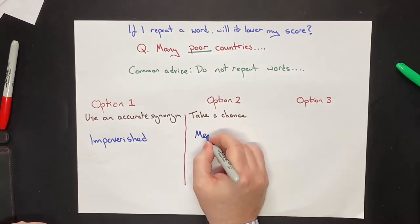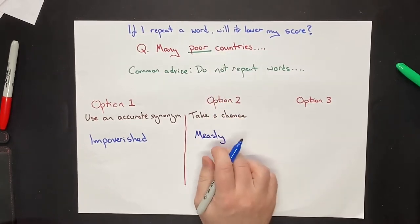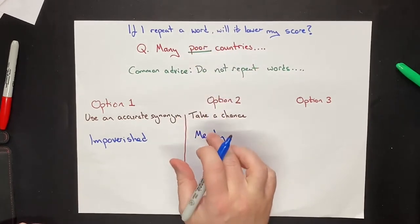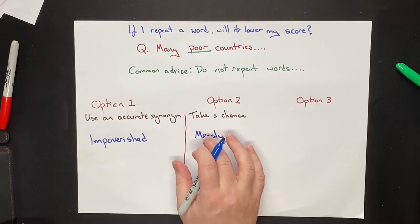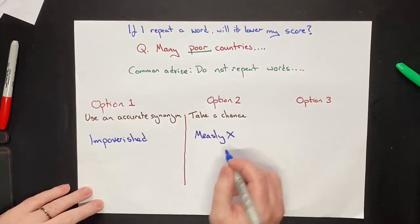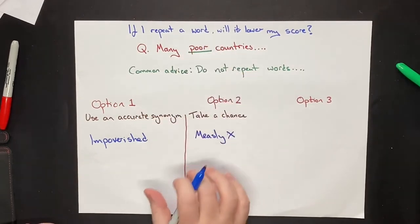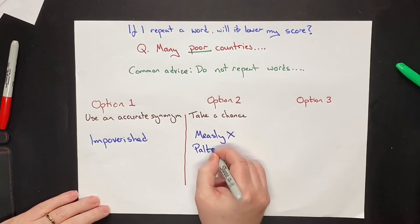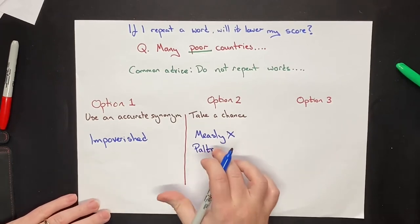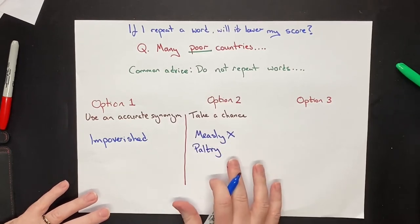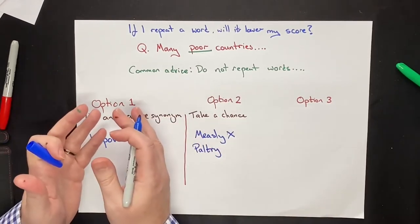For example, you might say measly. Measly and poor are synonyms, but they actually have quite different meanings. If you said many measly countries, this would be completely wrong, even though they are synonyms. Or you might change it to something like paltry. Again, they are synonyms, but they mean very different things. There are close synonyms, synonyms that mean basically exactly the same thing, and then there are very loose synonyms. They are synonyms, but they don't really mean the same thing.